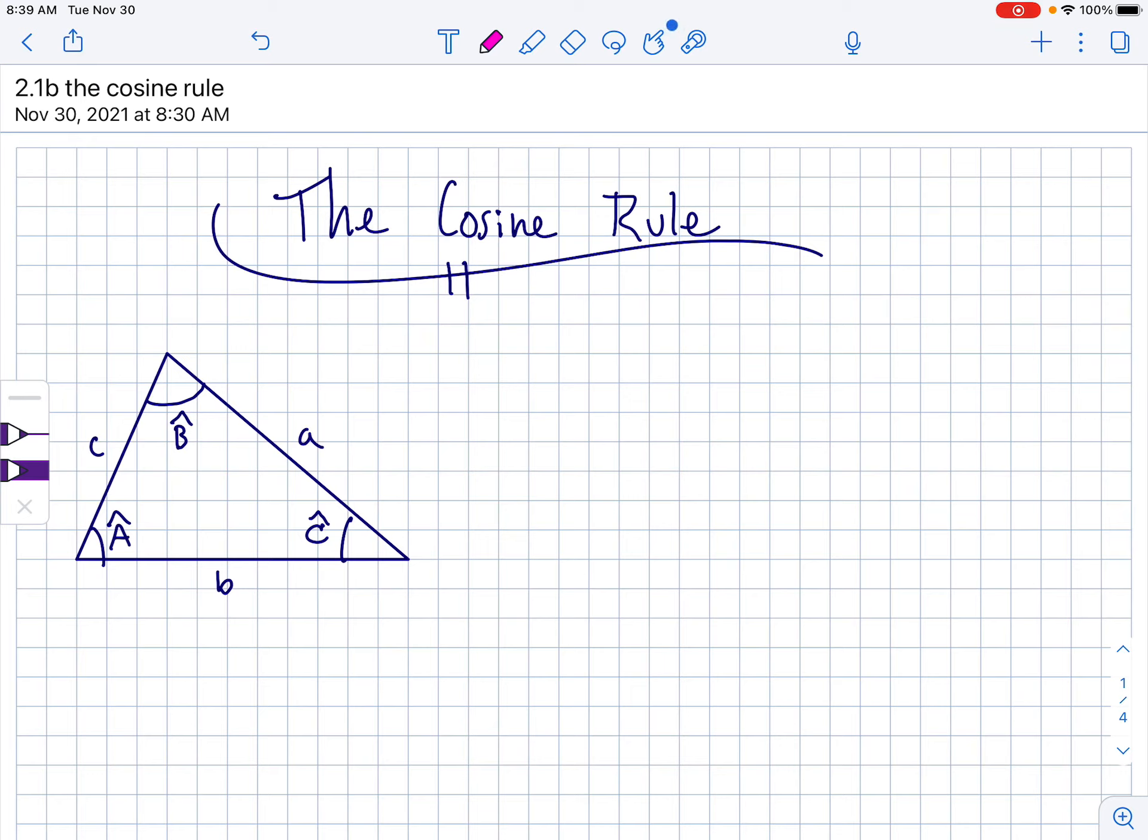So first up, I always remember it's kind of like the Pythagorean theorem. C squared equals A squared plus B squared. But then there's a lot more after it. Then you have to subtract two times A times B times the cosine of capital C. Remember that capital C is the angle there. Now, that's a long and involved equation, but that's not all. There's more.